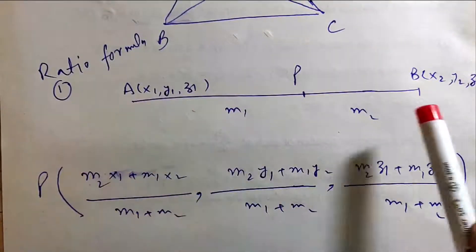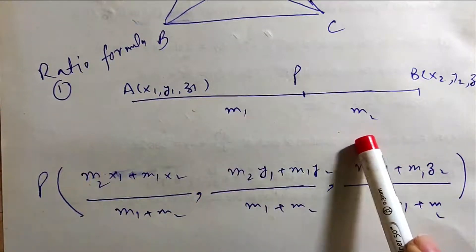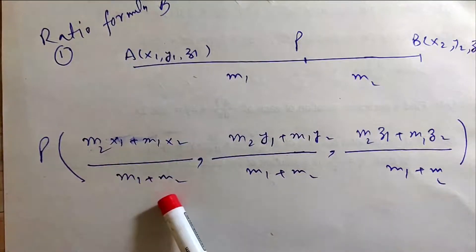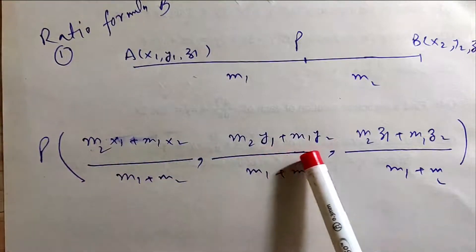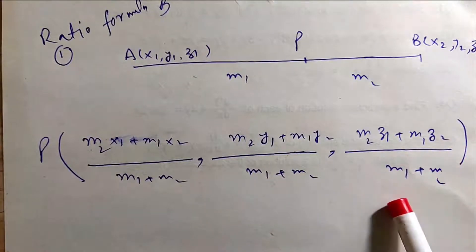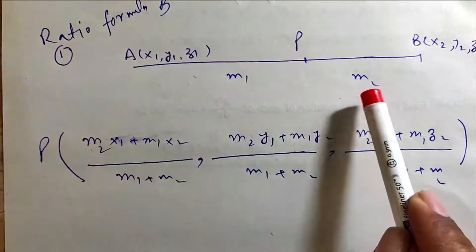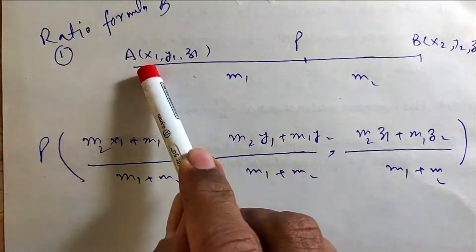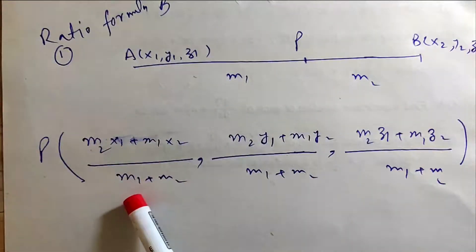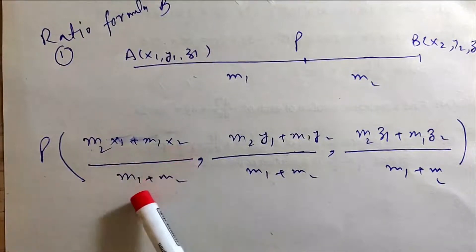Section Ratio Formula: Given two points A and P, if P divides in ratio M1:M2, then the coordinates of P are: first component is M2·x1 plus M1·x2 over M1 plus M2. For the first component, multiply this ratio with the first element and add, over the sum of both ratios. We get M2·x1 plus M1·x2 over M1 plus M2.